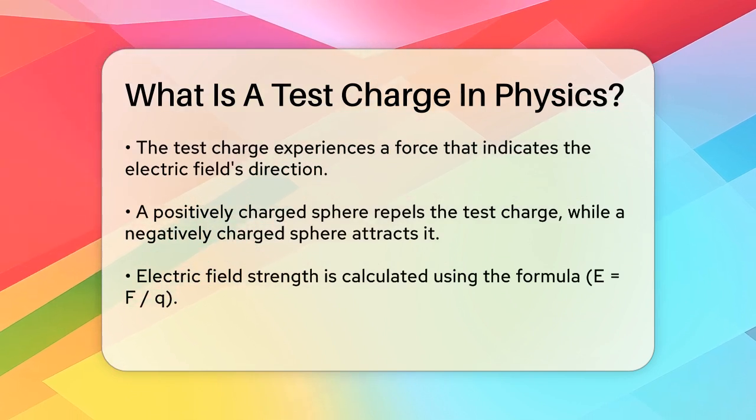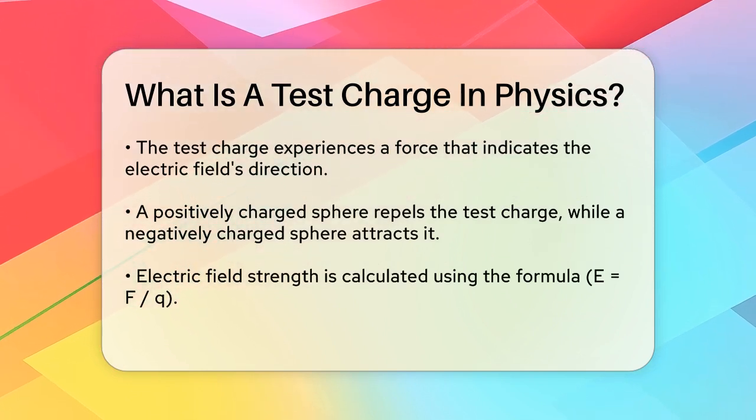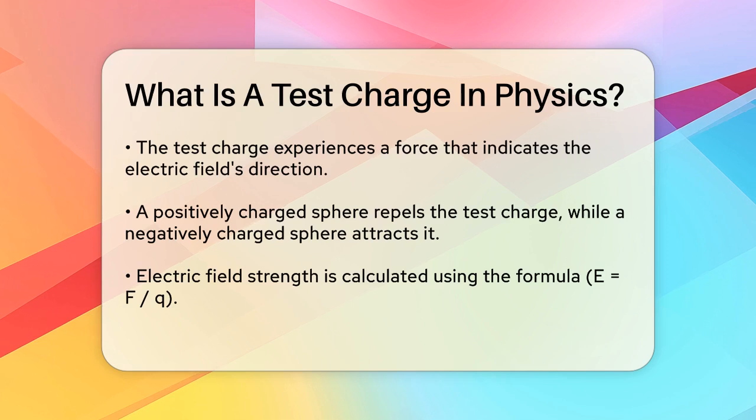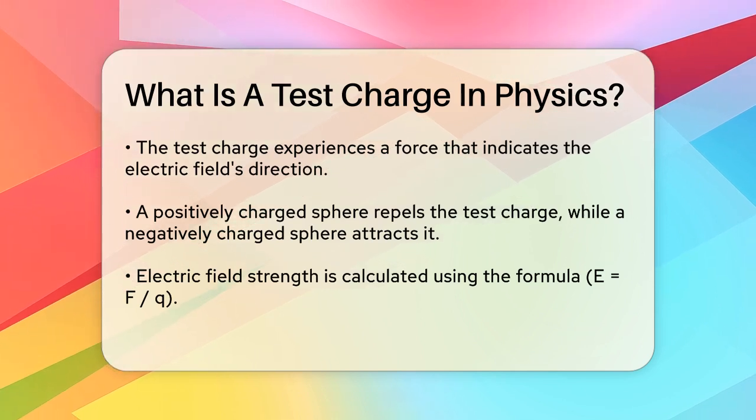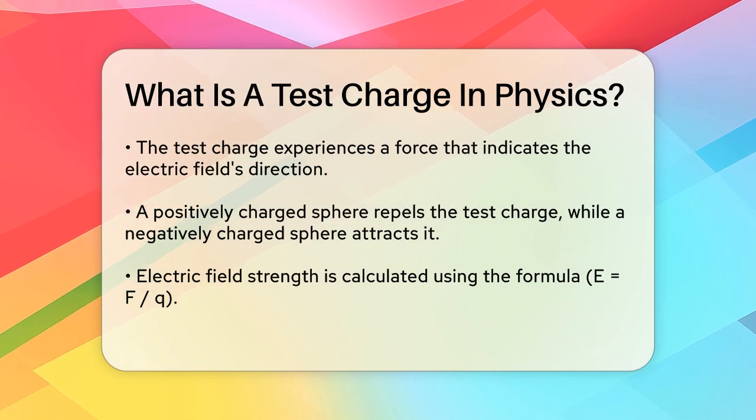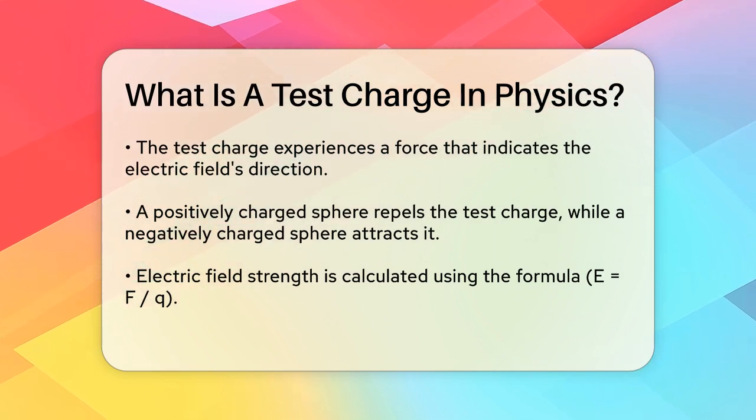For example, if you take a tiny proton, which has a charge of about 1.6 × 10^-19 coulombs, and place it near the positively charged sphere, this proton will experience a repulsive force. The direction of this force tells you the direction of the electric field at that point. If the sphere had a negative charge, the proton would experience an attractive force instead.